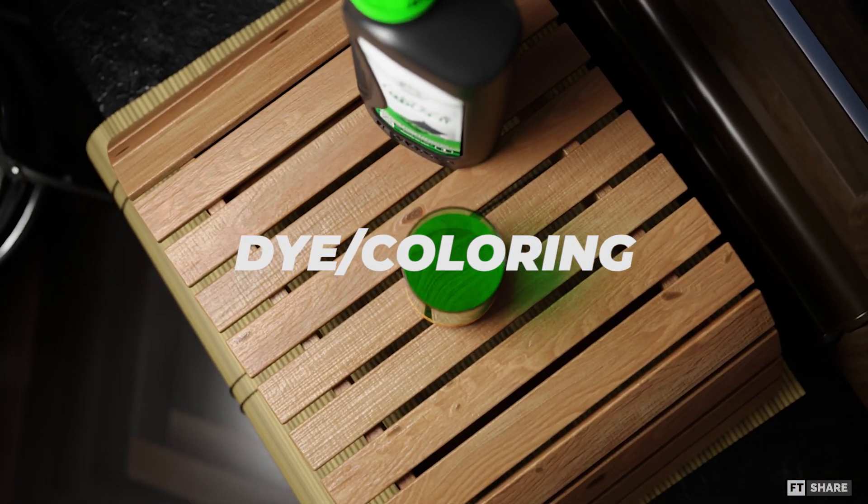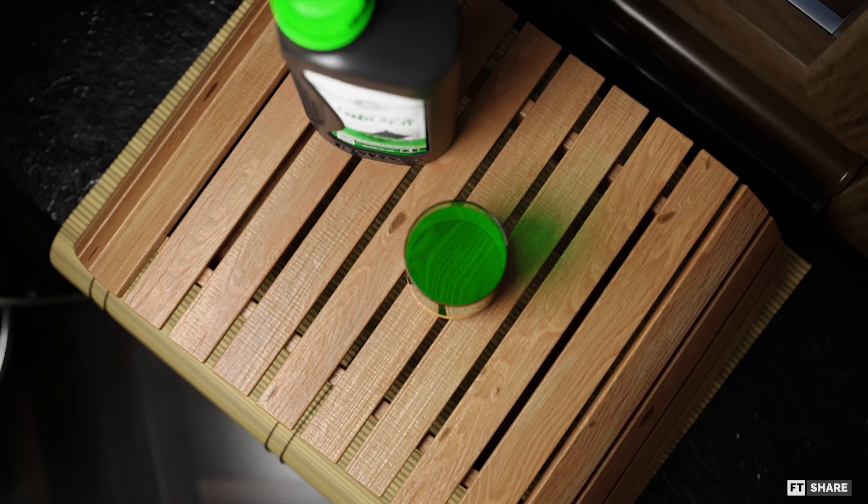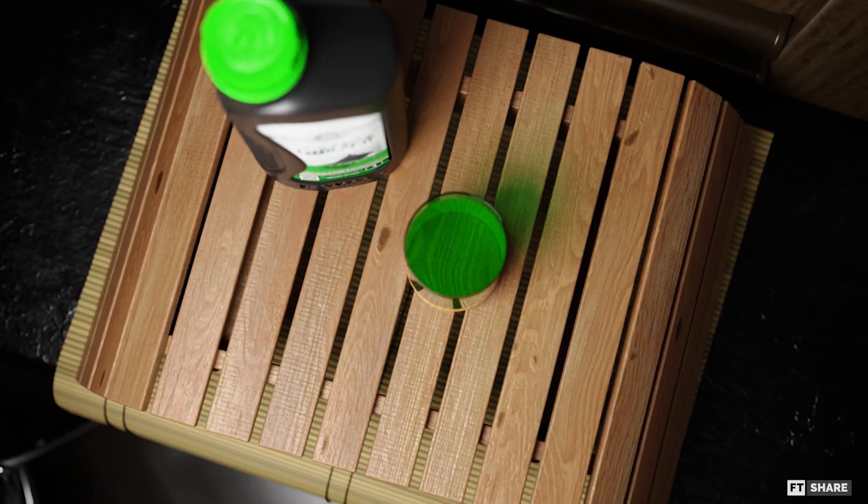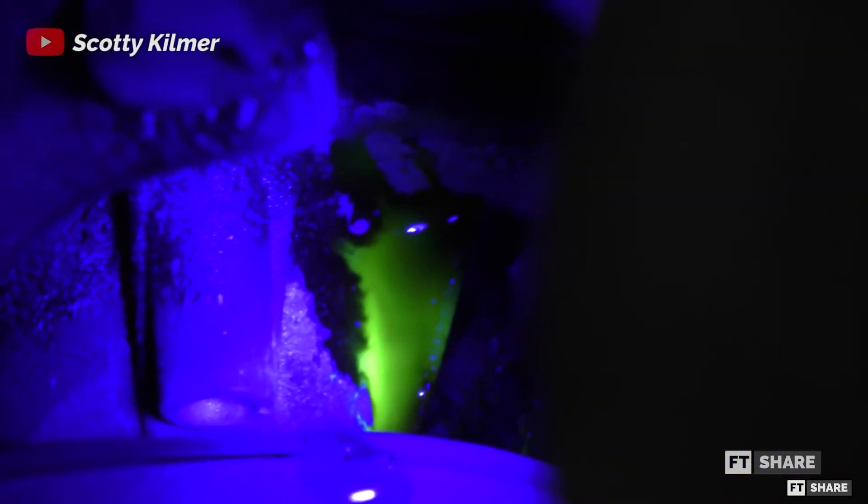And finally, dye. Some radiator coolant manufacturers usually add dye to the fluid to make it easier for users to see the coolant level, and also as an indicator when there is a leak, which can be easily detected under UV light.